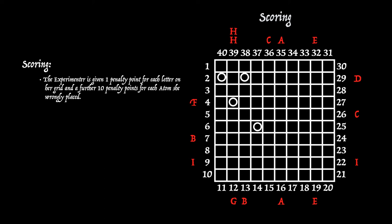For each letter on the experimenter's sheet, she'll gain one penalty point. And for each atom that is wrong, or wrongly placed, she'll gain another 10 penalty points. So at the end of the game, it's the lowest score that wins. So we can think of them as penalty points. So in this case, 15 letters, 15 penalty points.